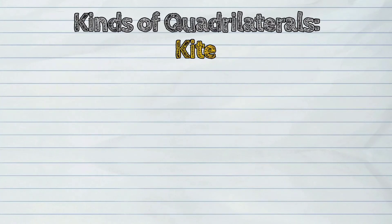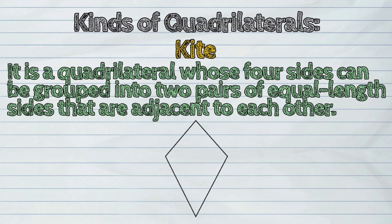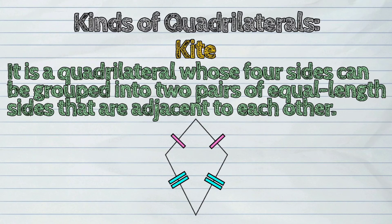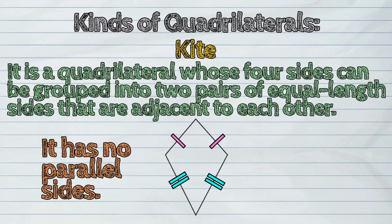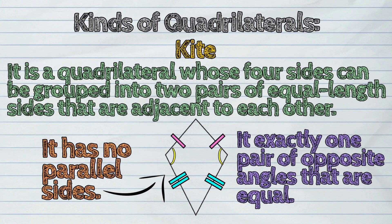Sixth, a kite. It is a quadrilateral whose four sides can be grouped into two pairs of equal length sides that are adjacent to each other. It has no parallel sides, and it has exactly one pair of opposite angles that are equal.